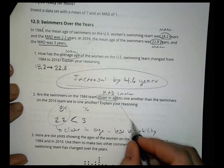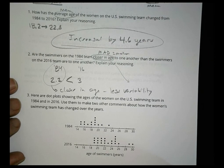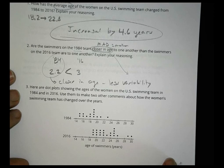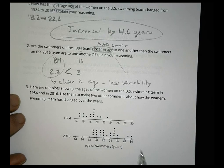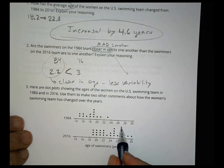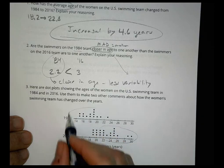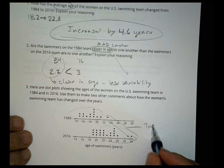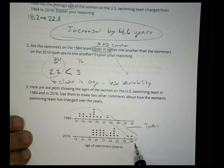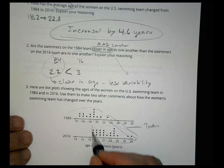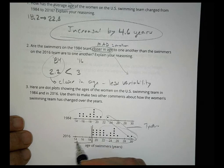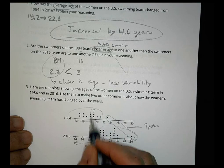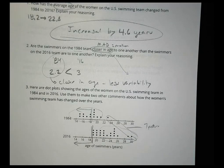Here's a dot plot that shows the age of the women on the US teams in 1984 and 2016. Using that, we can make two other comments about how the swimming team has changed. The age of swimmers has increased. The two oldest swimmers differ by about 7 years across the two teams. Now there are no swimmers under the age of 19 on the team, whereas before there were several under that age.